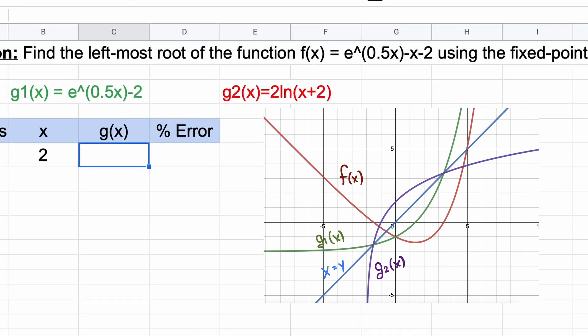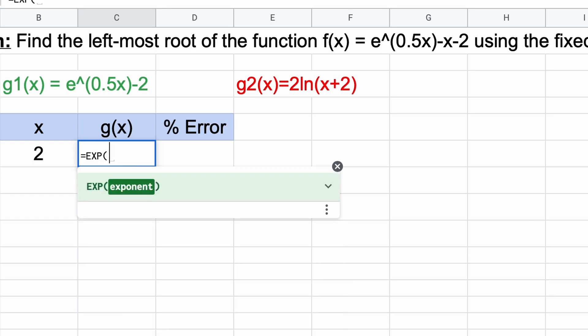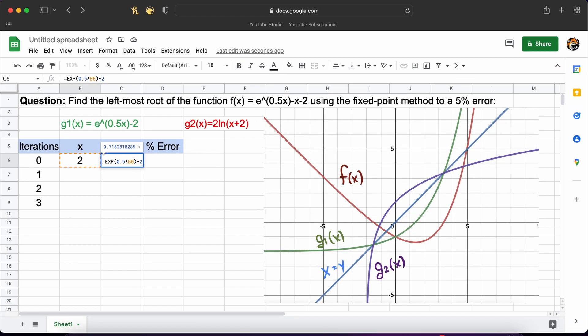Now we need to enter our g function here and anywhere we see x variable we will pick our current guess of x which is the column to the left here. So, this is our first iteration complete.